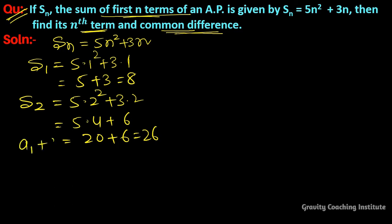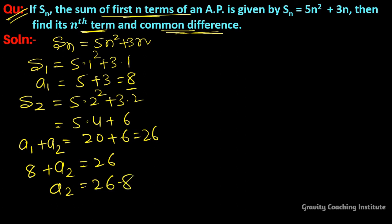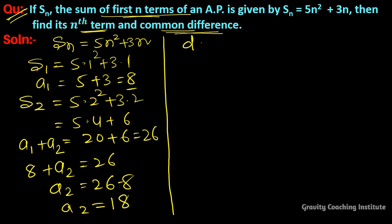S2 can be written as A1 plus A2, and S1 can be written as A1. So A1 equals 8. Putting this in: 8 plus A2 equals 26, so A2 equals 26 minus 8, which is 18. Therefore, common difference D equals A2 minus A1 equals 18 minus 8, which equals 10.